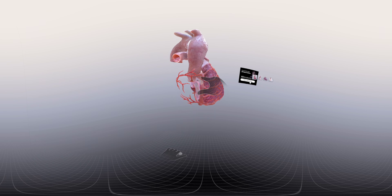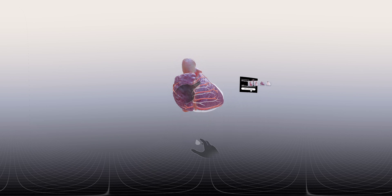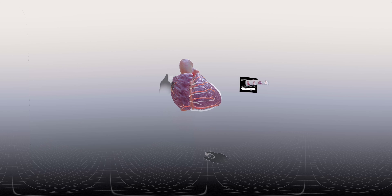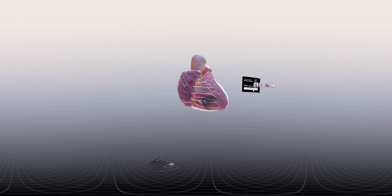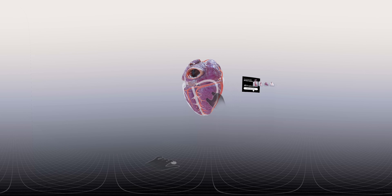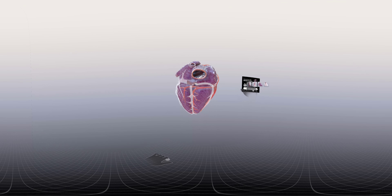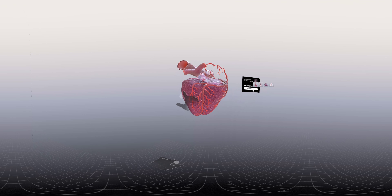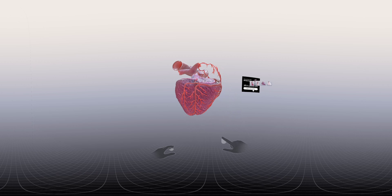After its emergence, it descends down the coronary sulcus on the right side, just between the right atrium and the right ventricle. Most commonly, it reaches the inferior surface of the heart, which it supplies in most cases.